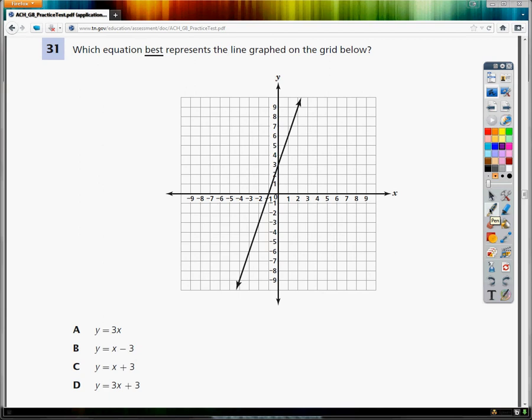Looking at my answer choices, I've got y by itself, which means I have slope-intercept form, which looks like this. It's called slope-intercept because it has both a slope and an intercept. If you scout the problem, it becomes much easier.